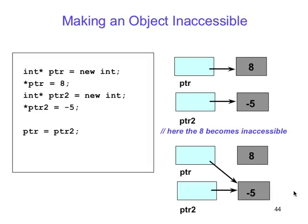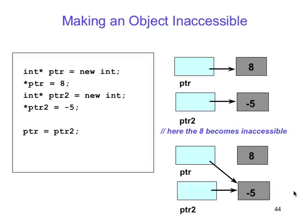Making an object inaccessible — we just saw how it actually worked. Here's another example of it, and here's our explanation of the memory leak: it's the loss of available memory space that occurs when dynamically allocated memory is allocated but never deallocated.